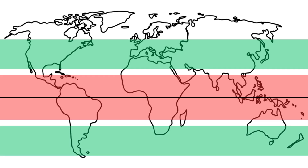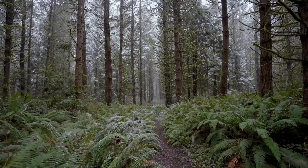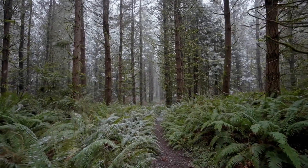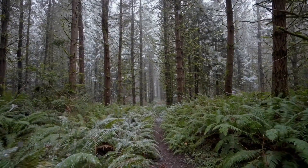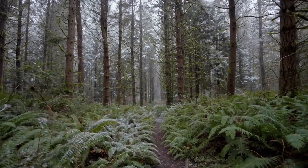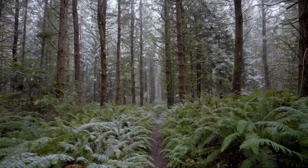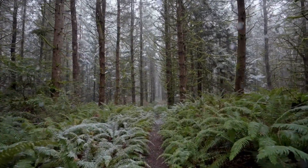Temperate rainforests are located about halfway between the equator and the poles. The temperature changes throughout the year, usually from 20 to 90 degrees Fahrenheit. This means temperate rainforests experience all four seasons, with cold winters and hot summers.